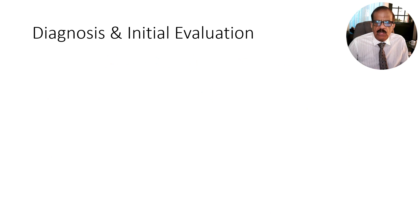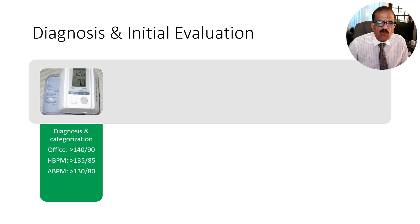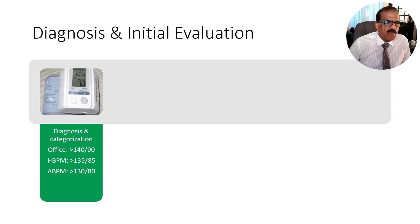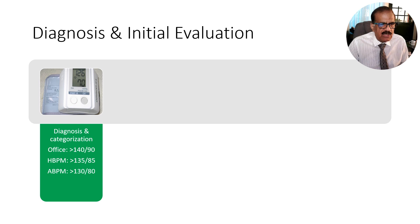Treatment also includes initial diagnosis and evaluation. The first part is careful measurement of blood pressure. For professionals, it is enough to say that a calibrated instrument should measure blood pressure carefully in a relaxed person after the patient has rested for five minutes. We mostly make the diagnosis on office readings, and if somebody has more than 140/90 on more than one occasion, he or she can be formally labeled as a case of hypertension.